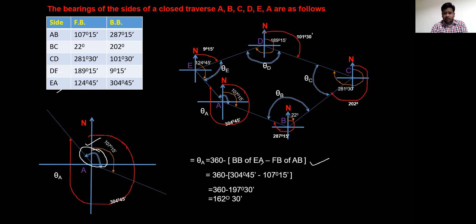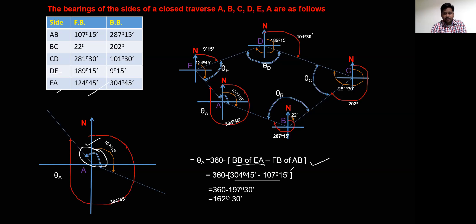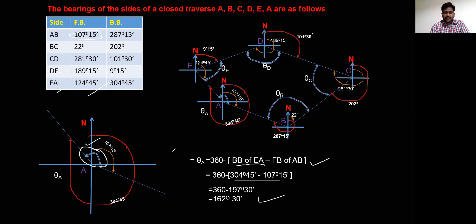To find the included angle at station A, we use: theta A = 360 minus back bearing of EA minus fore bearing of AB. The back bearing of EA is 304 degrees 45 minutes, and the fore bearing of AB is 107 degrees 15 minutes. So, 304 degrees 45 minutes minus 107 degrees 15 minutes gives 162 degrees 30 minutes. That is the included angle theta A at station A.